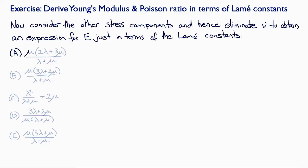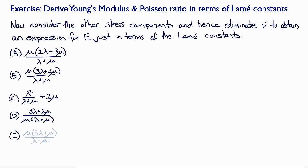Did you get A, mu times (2 lambda plus 3 mu) all over (lambda plus mu); B, mu times (3 lambda plus 2 mu) over (lambda plus mu); C, lambda squared over (lambda plus mu) plus 2 mu; D, (3 lambda plus 2 mu) over mu times (lambda plus mu); or E, mu times (3 lambda plus mu) over (lambda minus mu)?